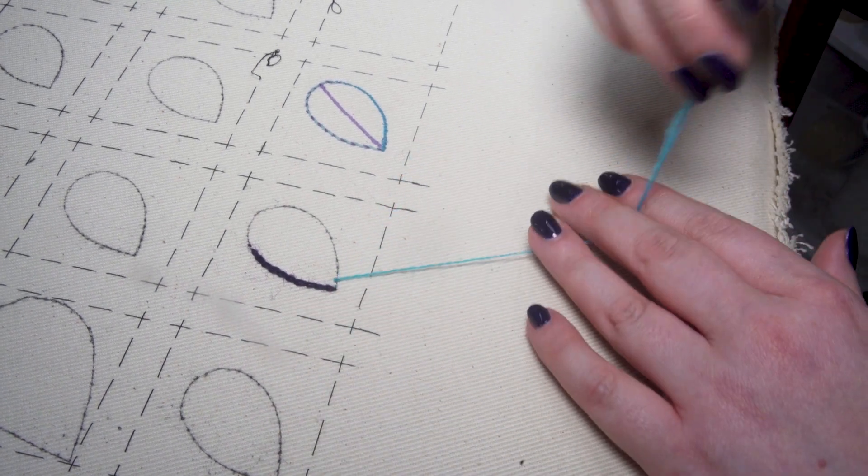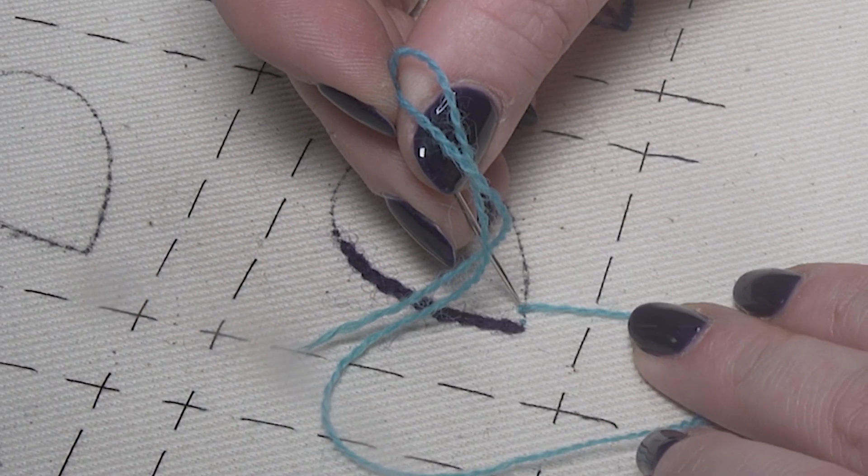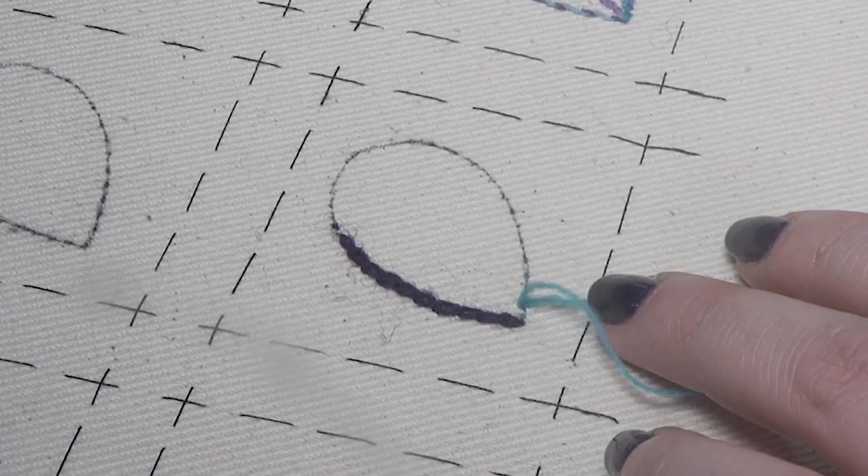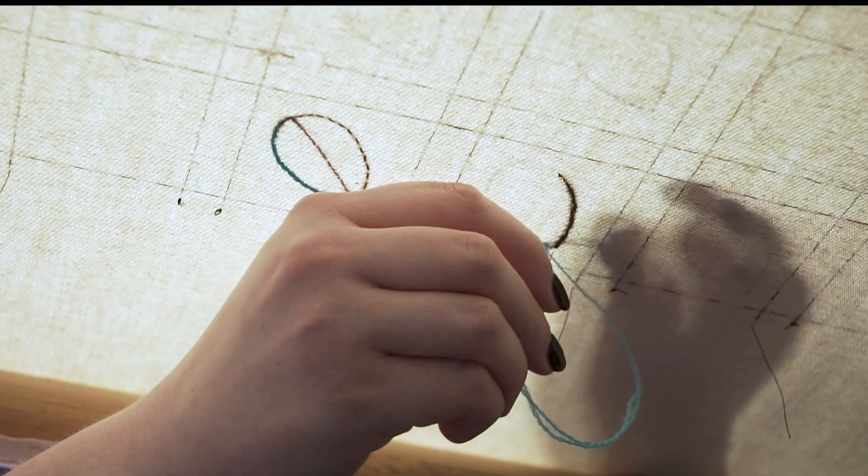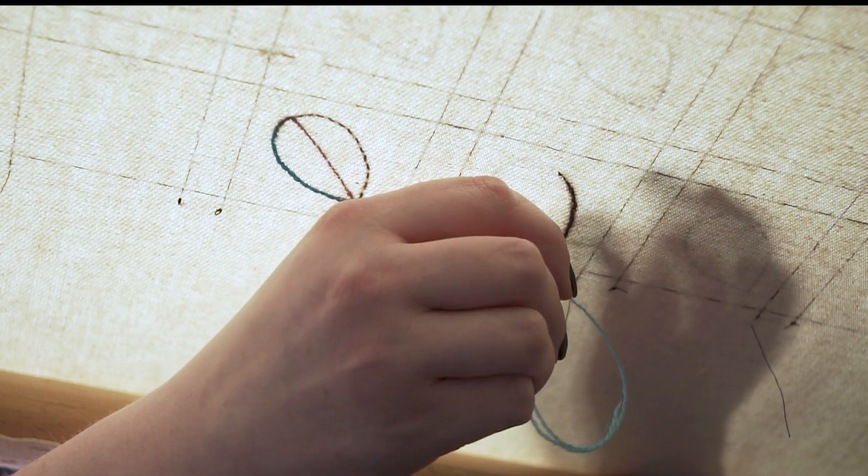So we have the thread ready and we start with the normal chain stitch and then going up to catch the loop.